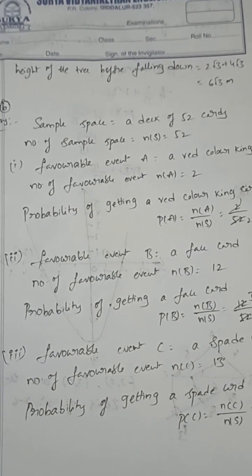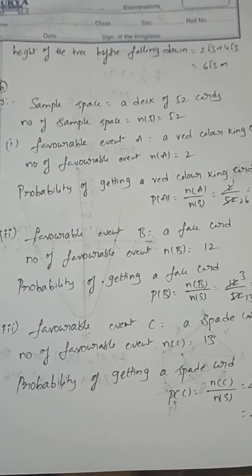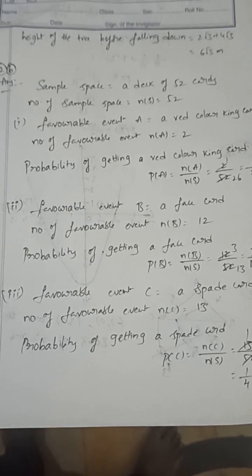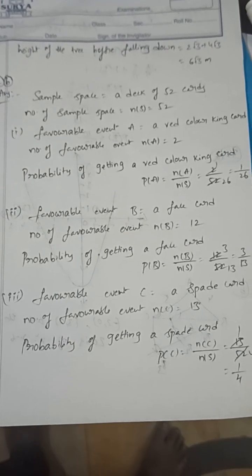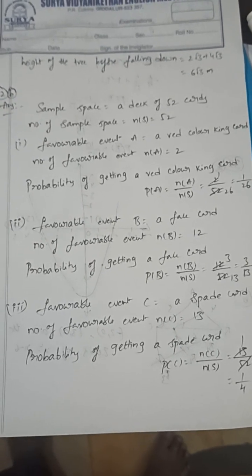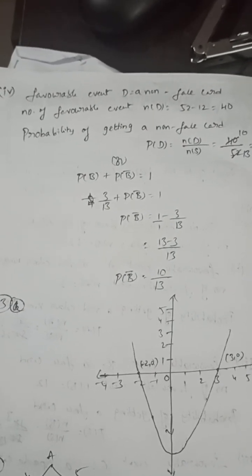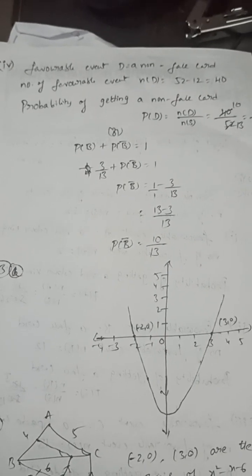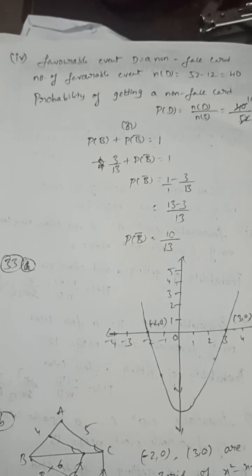Sample space of a deck of cards is 52 cards. Number of sample space is 52. Favorable event A: red king. There are 2 red kings, so P(A) = 2/52 = 1/26. Favorable event B: face card. Number of face cards is 12, so P(B) = 12/52 = 3/13. Favorable event C: spade card is 13, so P(C) = 13/52 = 1/4. Probability of non-face card is 40, so P(non-face) = 40/52 = 10/13. Otherwise, P(B) + P(B̅) = 1, so P(B̅) = 10/13.